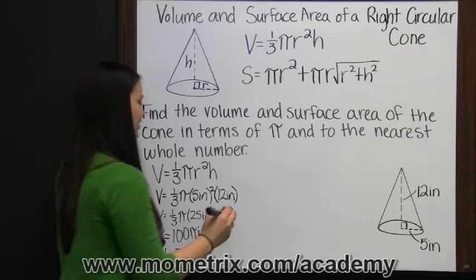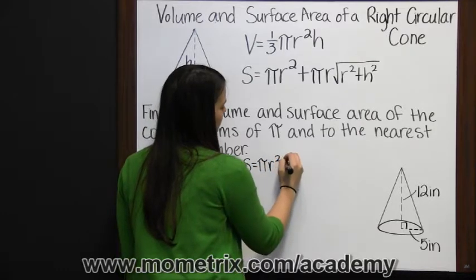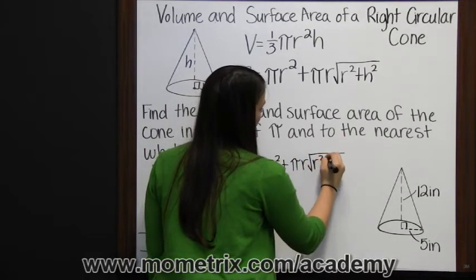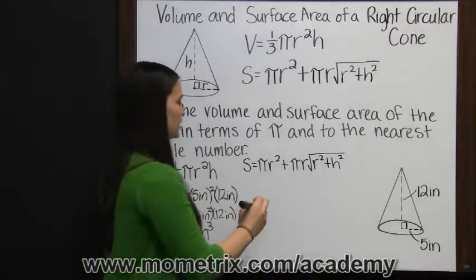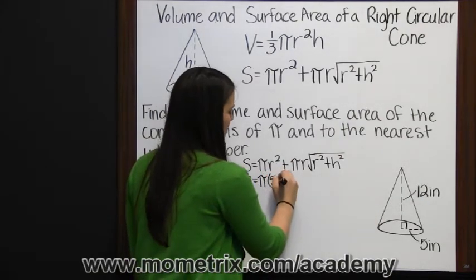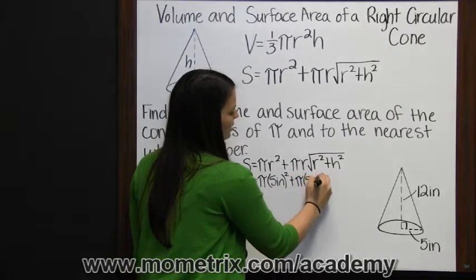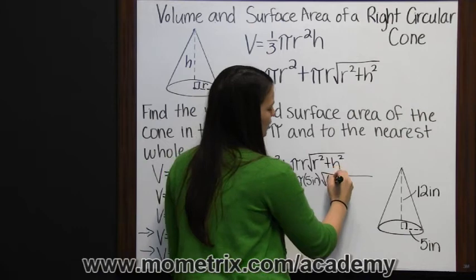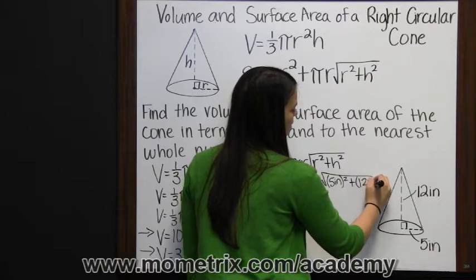Now to find surface area. We'll start with our formula. Surface area is the area of the base, pi r squared, plus pi times radius times the square root of radius squared plus height squared. We need to substitute our radius and our height. So surface area is pi times the radius, five inches, squared, plus pi times the radius again, five inches, times the square root of the radius squared, five inches squared, plus the height squared, twelve inches squared.